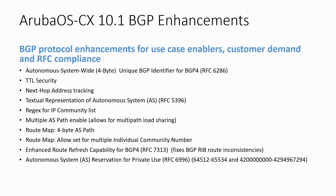There are quite some new BGP features available in release 10.1. There is support for 4-byte autonomous system-wide unique BGP identifiers described in RFC 6286, TTL security, next-hop address tracking, textual representation of autonomous systems described in RFC 5396, regular expressions for IP community lists, multiple AS path enable which allows for multi-path load sharing, and route map support for 4-byte AS paths allowing multiple individual community numbers.